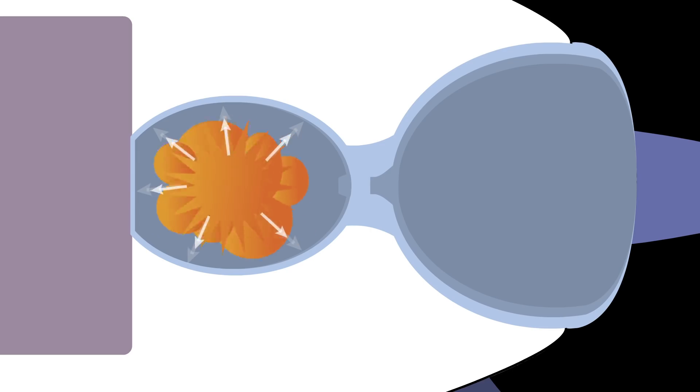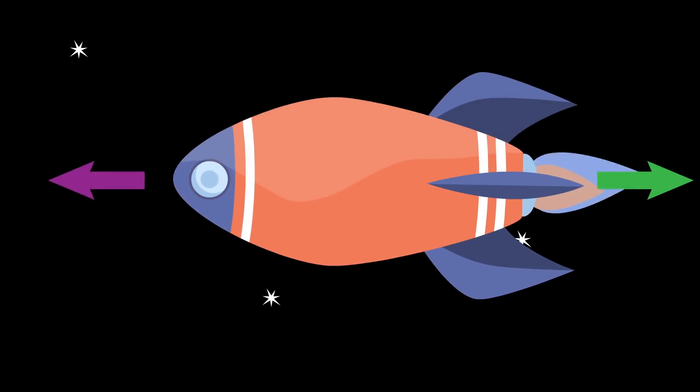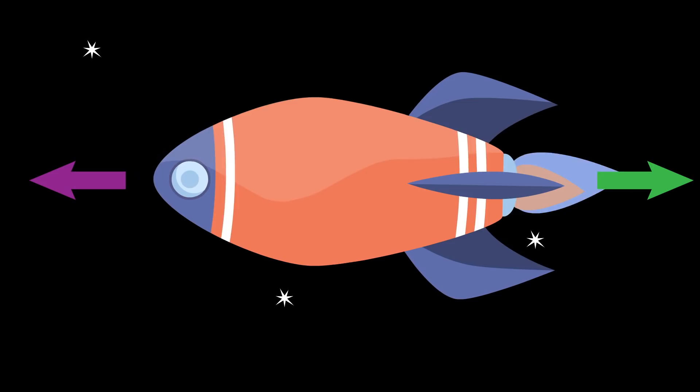When the fuel is ignited in the combustion chamber, it creates a tremendous amount of pressure as the fuel converts into gas and rapidly expands. The rocket provides only one path of escape for the expanding gases, and as those gases are forced out of one end of the rocket, they in turn exert a force on the rocket in the opposite direction.